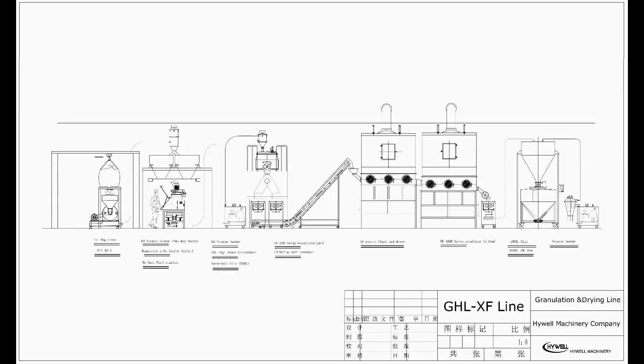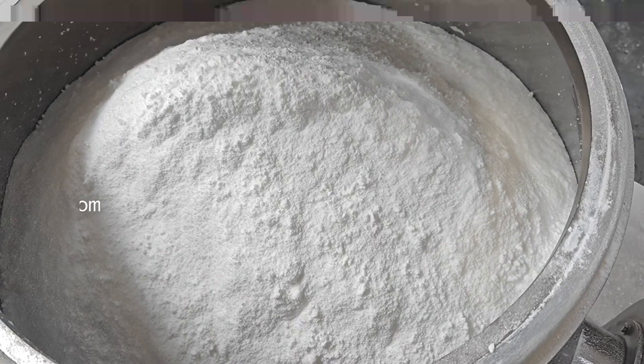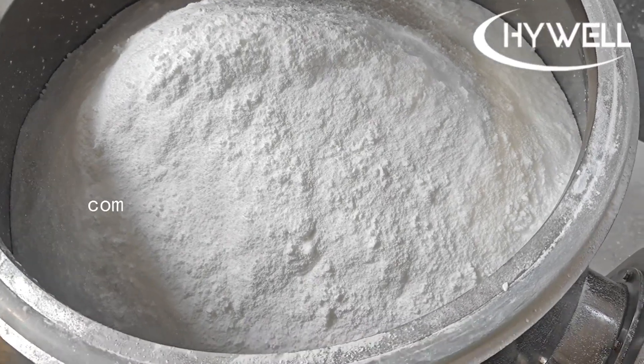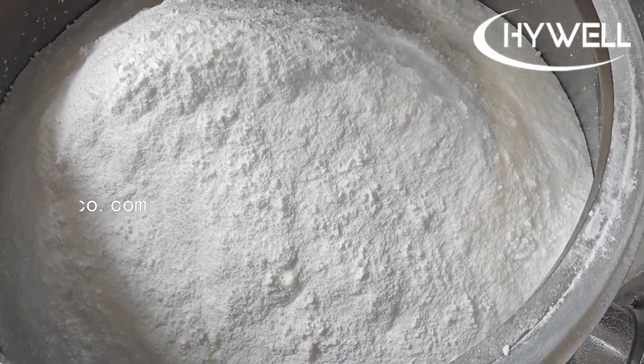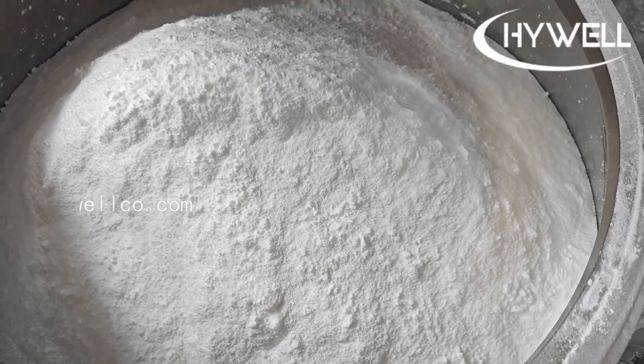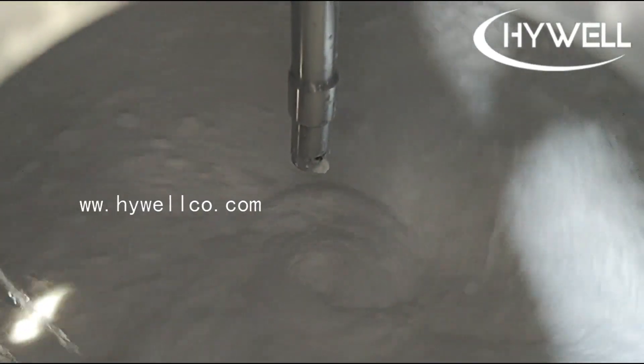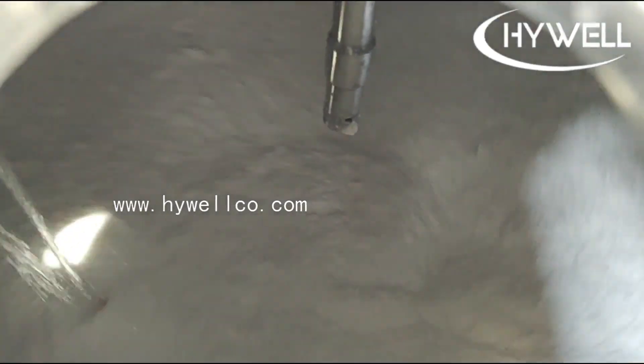This video shows the operation of a continuous wet instant granule production line, which is a test granulation machine in our factory. We test the materials according to the customer's process requirements to ensure that they meet the production needs.